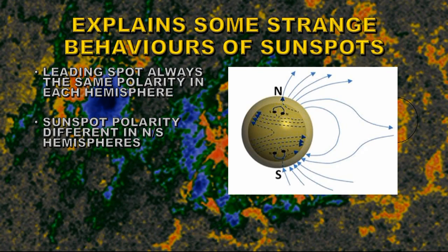Similarly in the southern hemisphere, the tilt is the opposite way. So in the southern hemisphere the leading spot would always be south and the trailing spot always be north. So you have different polarities for the sunspot groups in the two hemispheres.